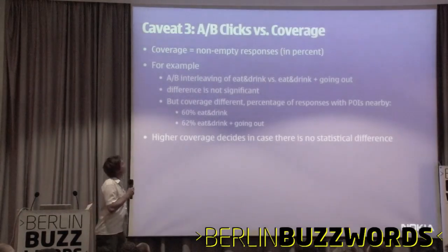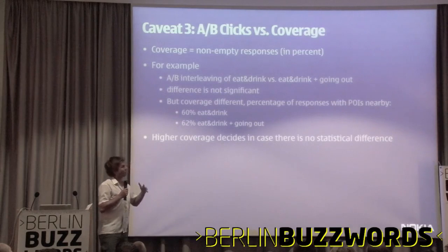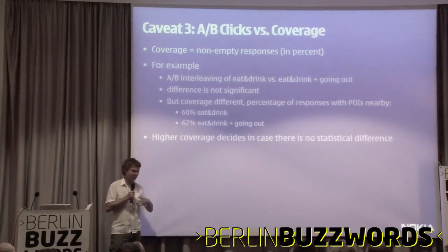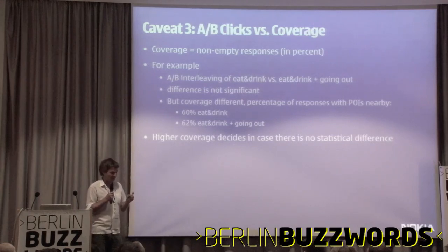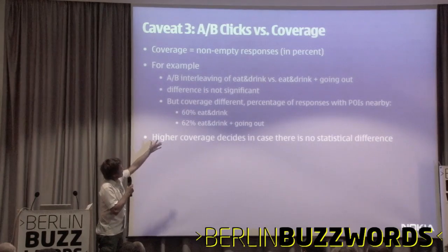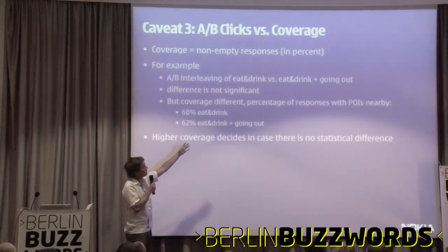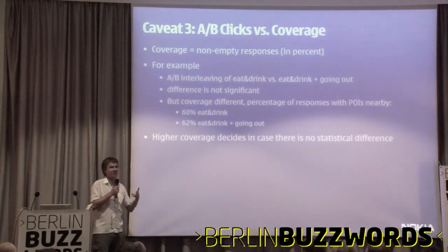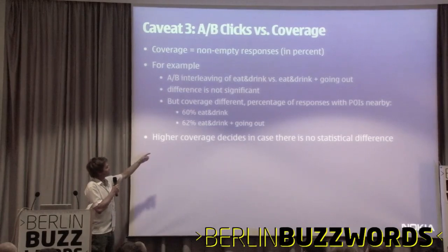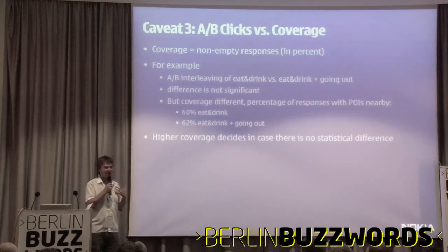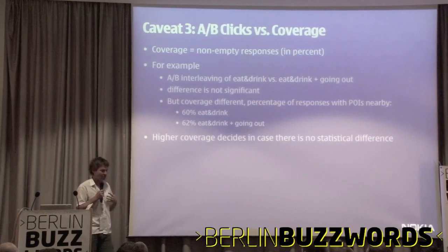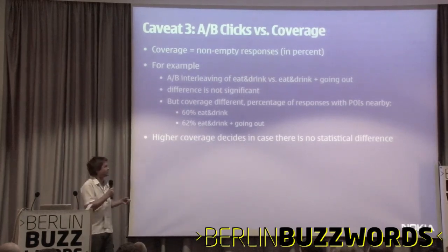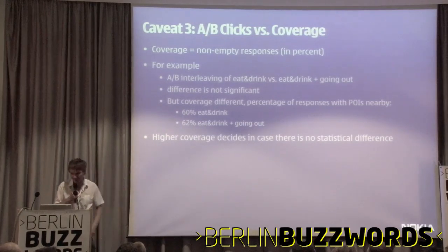Here's the last warning: different versions might exhibit different coverage — by coverage I mean non-empty responses in percent. The nearby places feature is trying to recommend places, and we tested eat-and-drink versus a combination of eat-and-drink and going-out. The statistical significance is not significant between them, but it happens that the combination gives you better coverage — you can give users more often an answer and don't disappoint them with 'we don't know recommended places in this area.' So higher coverage decides in the case where there is no statistical significance.